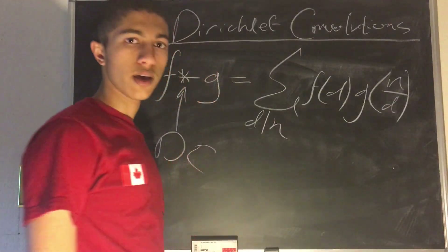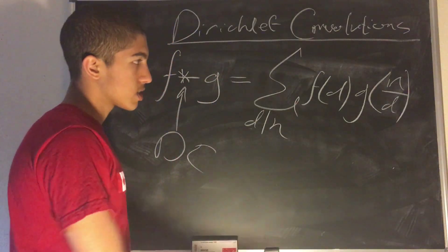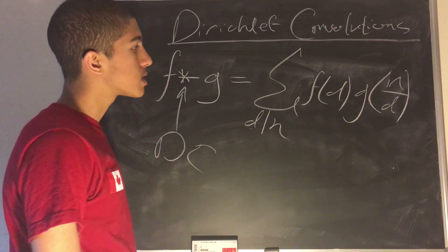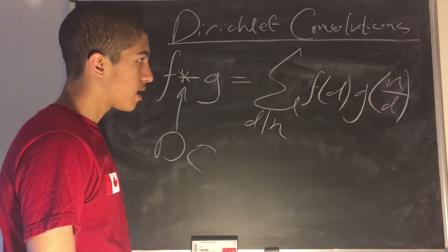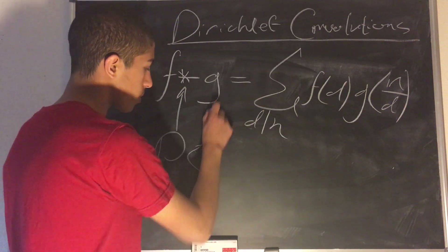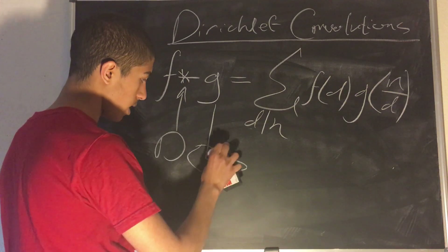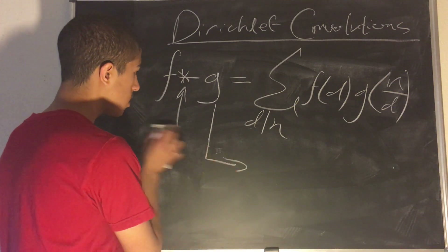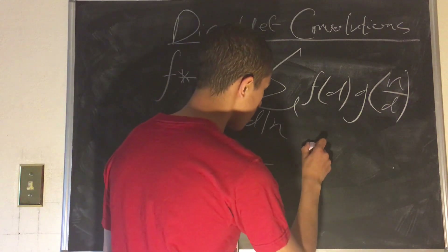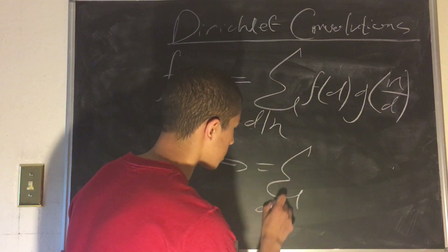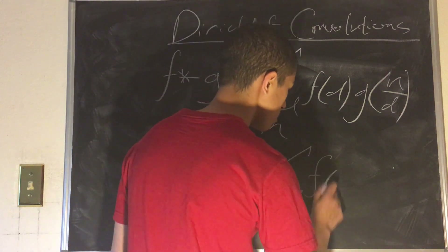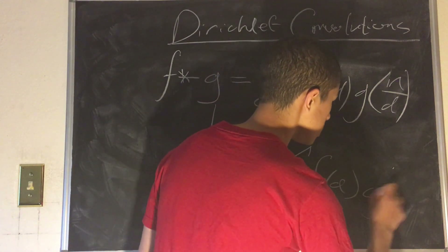You might be saying, what does this really mean? What is the intuition behind this? A more intuitive way of writing this expression would be: this is equal to the sum over a times b equals n of f of a times g of b.